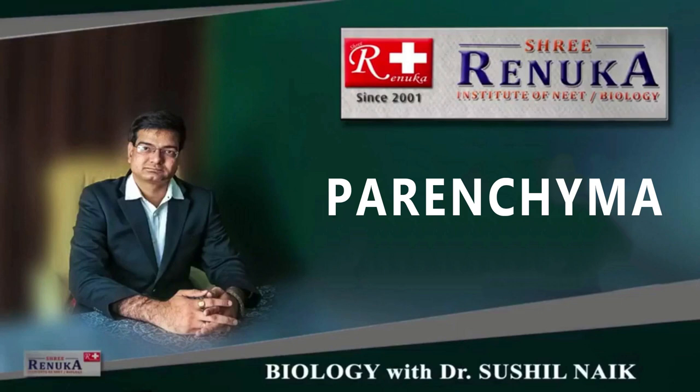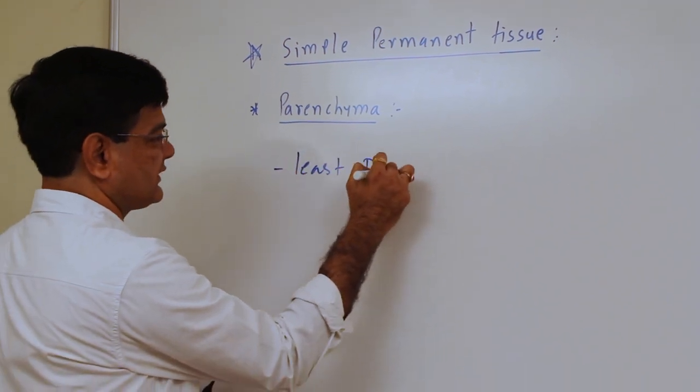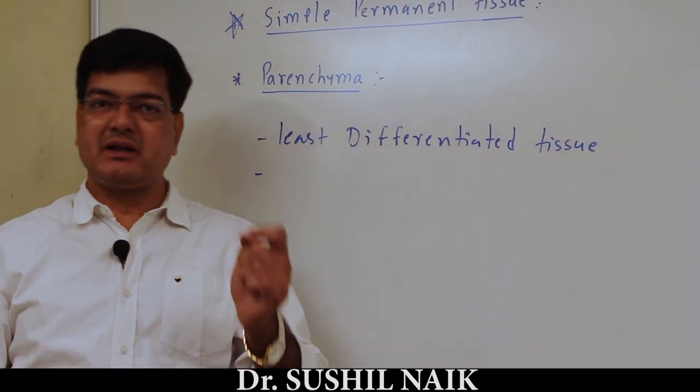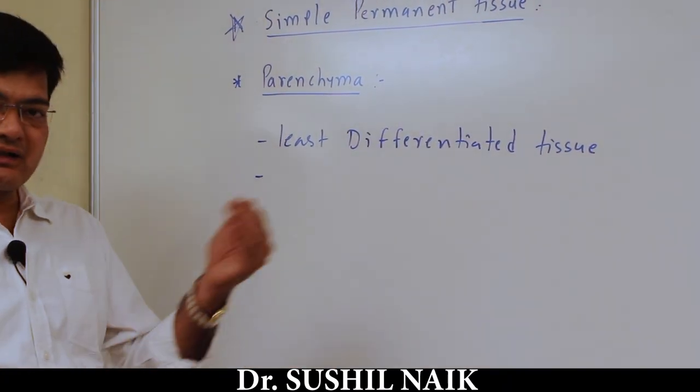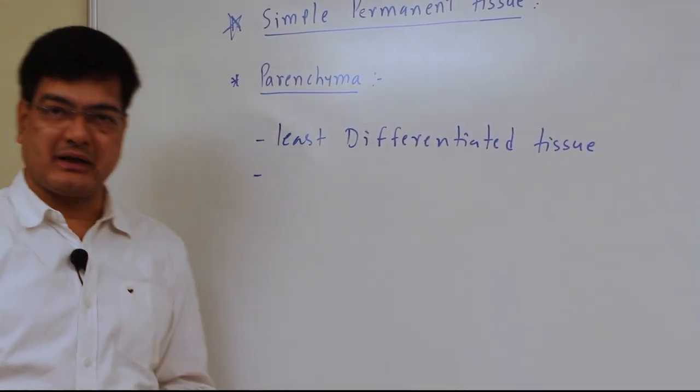In simple permanent tissue, we talk about parenchyma first. Parenchyma is the least differentiated plant tissue. When meristematic tissue loses the ability of cellular division, it gets transformed into simple permanent tissue, and the first one is parenchyma.